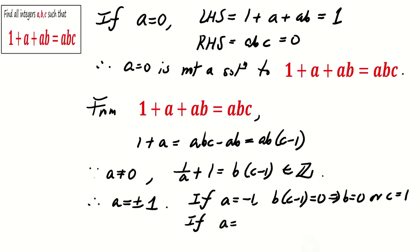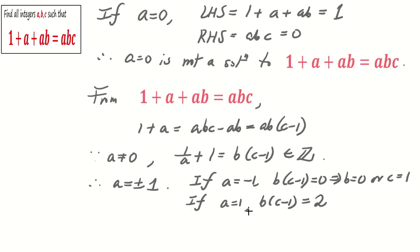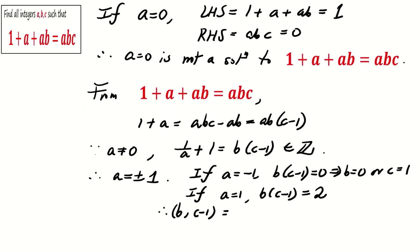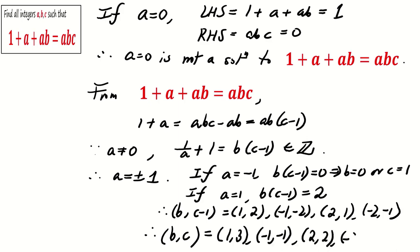If a = 1, then b(c - 1) = 2, which means that b and (c - 1) can be (1, 2), (-1, -2), (2, 1), or (-2, -1). So the respective values of b, c are as follows.